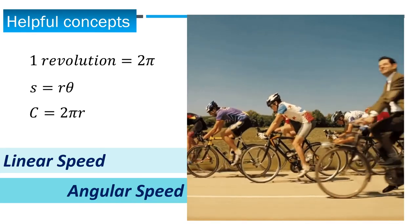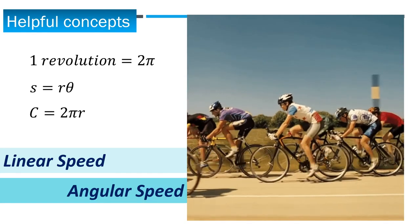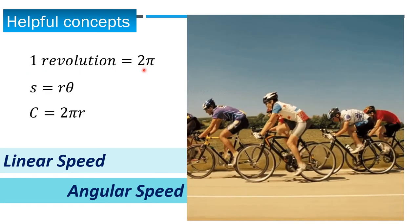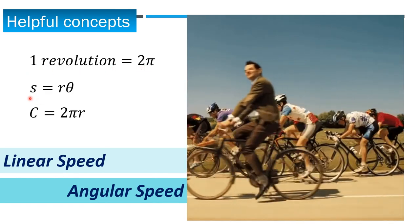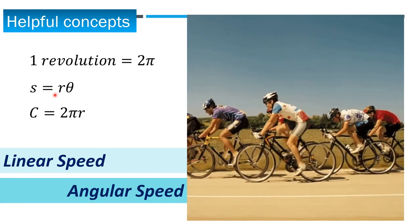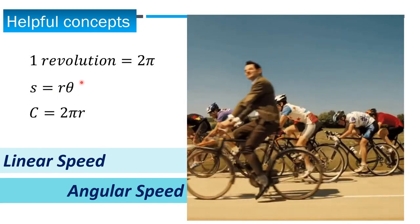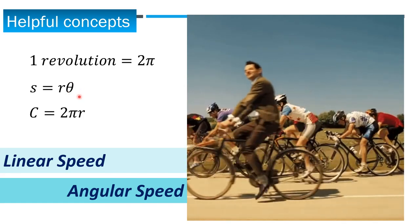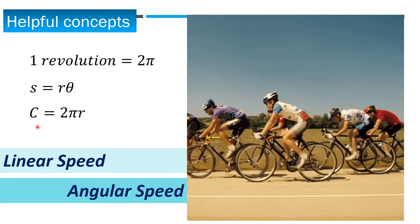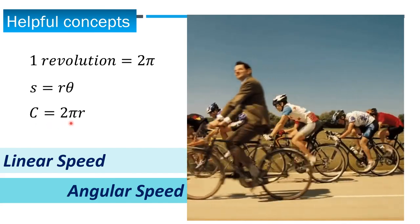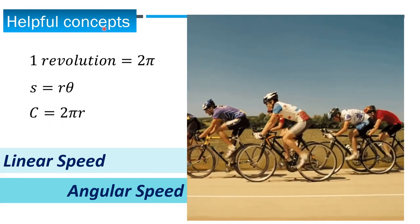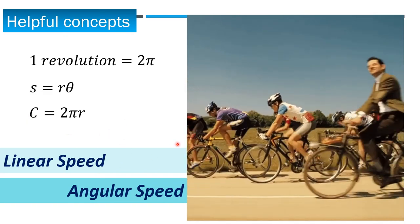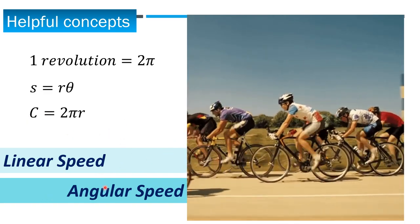Before we proceed to examples, recall that one revolution is equal to two pi radians, the arc length s is equal to the product of the radius and the central angle theta in radians, and the circumference of a circle equals two pi r. All of these are helpful concepts you need to recall to solve for linear speed and angular speed.